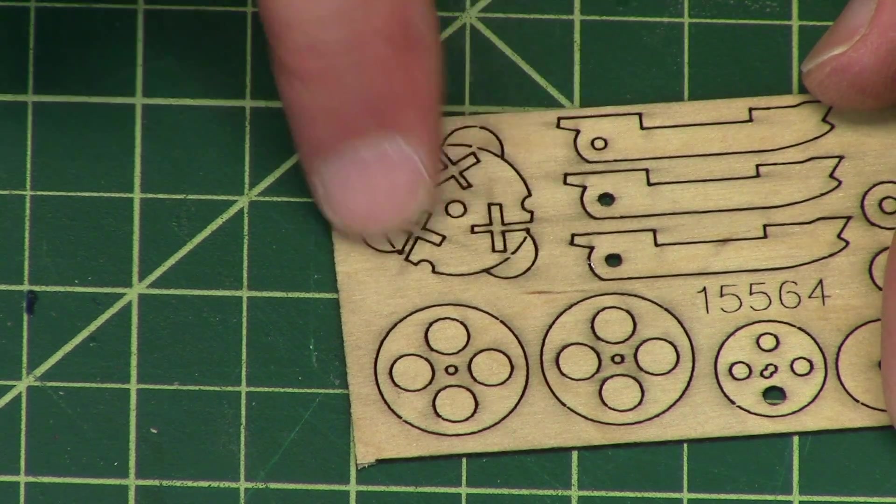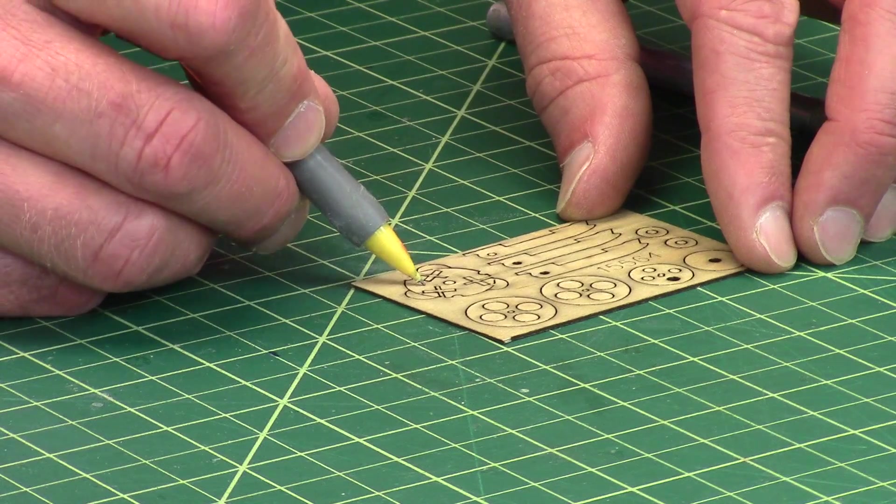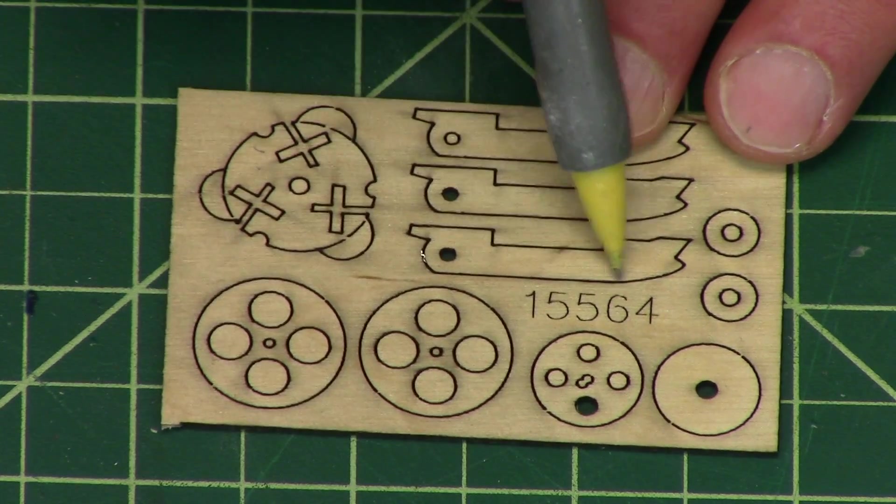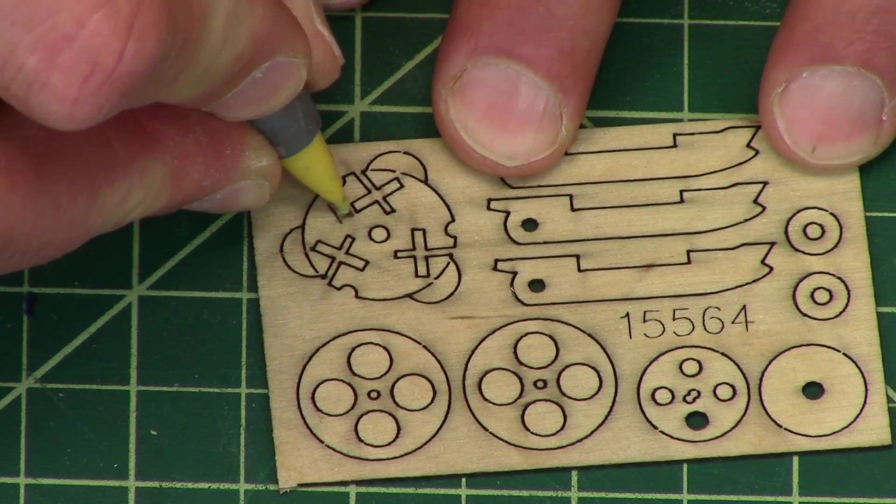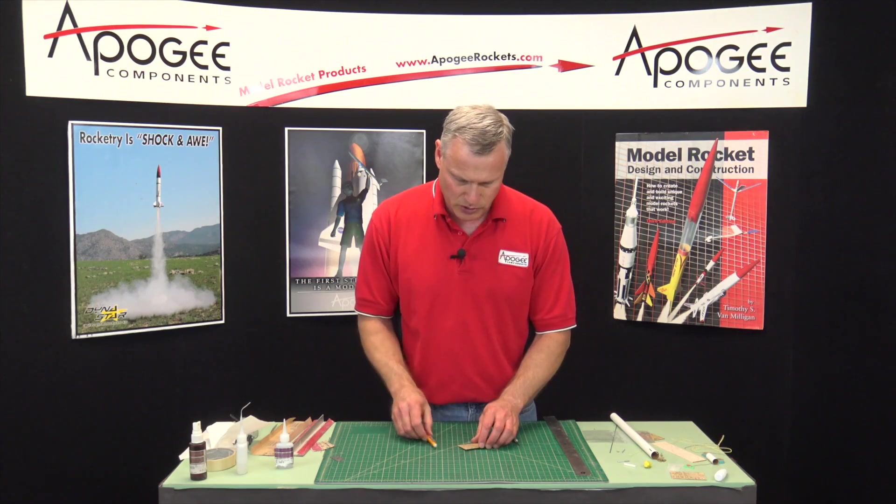Okay, so we want to remove this piece, but before we do, let's mark this as the top side. Remember, if you can see the numbers here, the part number on the plywood, that's the top. So I'm going to put a little T here for top. That's the part that's going to go towards the base of the nose cone.